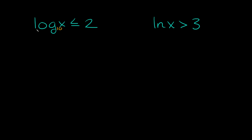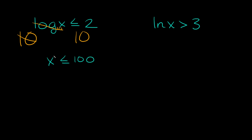Now we're trying to solve for x, so how do we get rid of this log base 10? All you have to do is take whatever little number you have here — the base — and write a big one right here. So we're basically saying 10 raised to this whole thing, and what we do to one side of the equation we have to do to the other. So we have to say 10 raised to this whole side also. Then the log base 10 and the 10 cancel out, and we're just left with x, which is less than or equal to 10 squared, which equals 100. So our answer is x is less than or equal to 100.